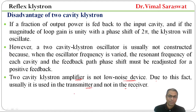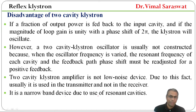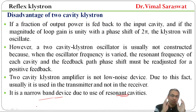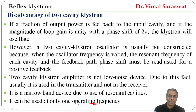The 2-cavity klystron amplifier is not a low noise device, so generally we use it in transmitters and not in receivers. It is a narrow band device due to use of resonant cavities, meaning it works only within a particular bandwidth. It can be used at only one operating frequency. These are the drawbacks or disadvantages of the 2-cavity klystron.